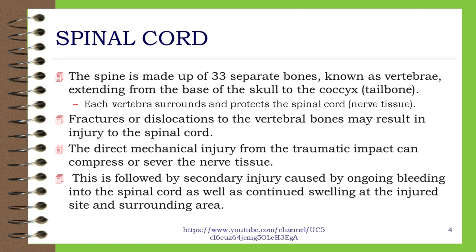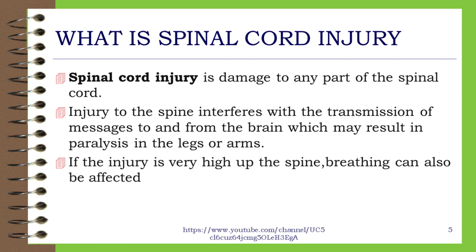The direct mechanical injury from the traumatic impact can compress or sever the nerve tissue. This is followed by secondary injury caused by ongoing bleeding into the spinal cord as well as continued swelling at the injured site and surrounding area. Spinal cord injury is damage to any part of the spinal cord. Injury to the spine interferes with transmission of messages to and from the brain, which may result in paralysis in the legs or arms. If the injury is very high up the spine, breathing can also be affected.